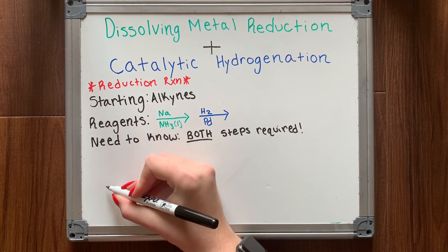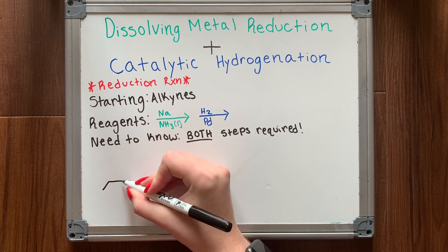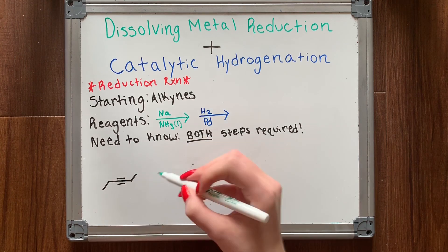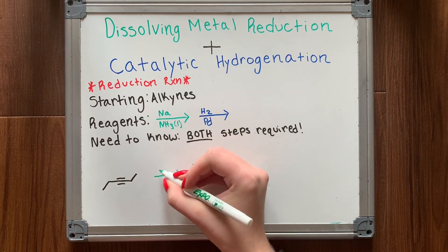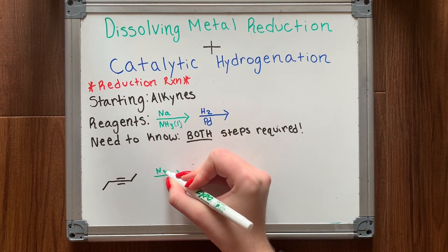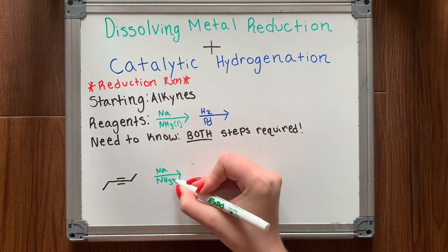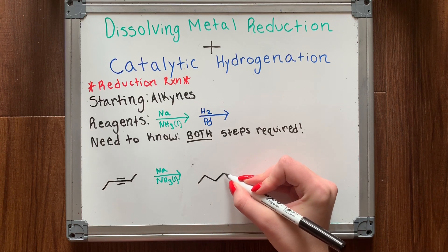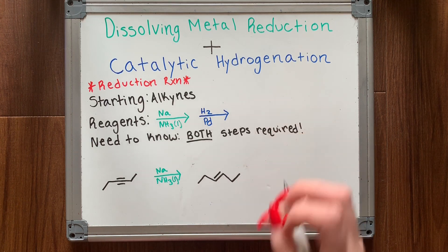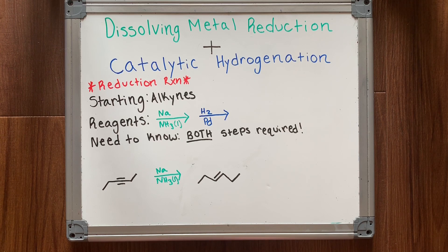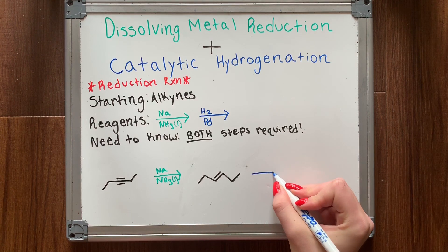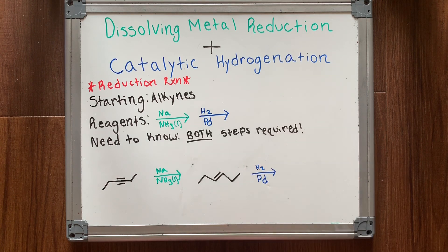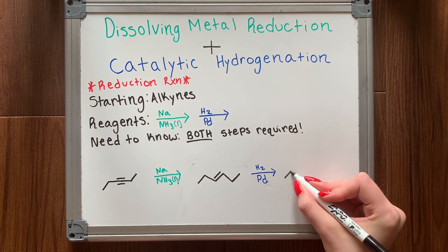Up next is dissolving metal reduction combined with catalytic hydrogenation. This is a reduction reaction and your starting material is an alkyne. In the first step, you reduce your alkyne to an alkene with a dissolving metal reduction. In the second step, you treat your alkene with molecular hydrogen and a catalyst to get your resulting alkane. Both steps are required — you can't just do one or the other, otherwise you will not get your desired product.